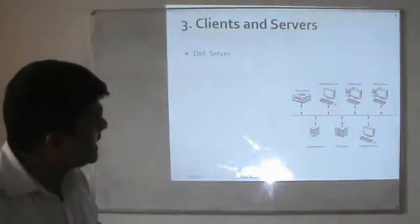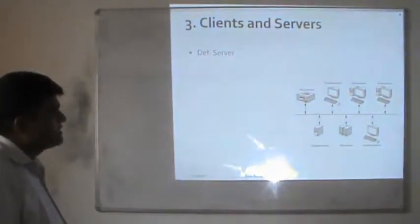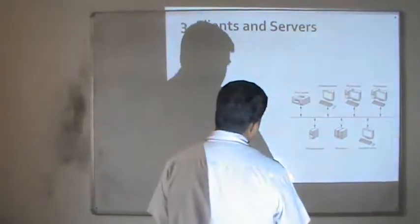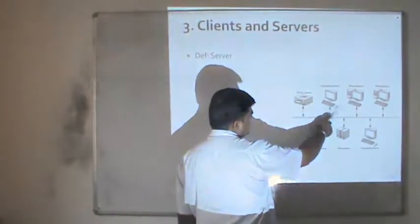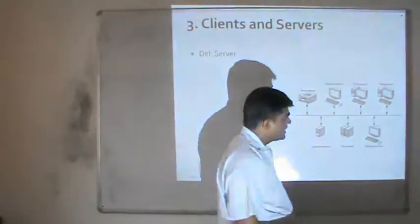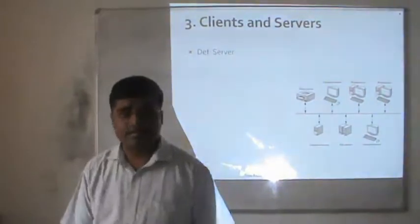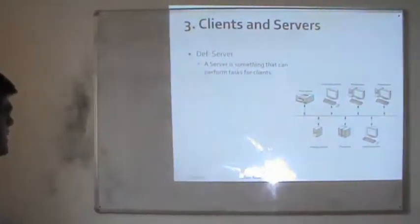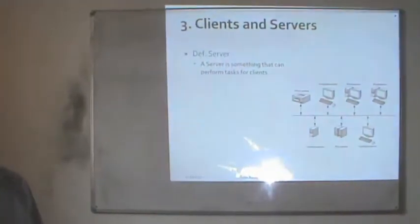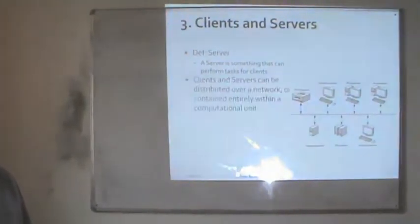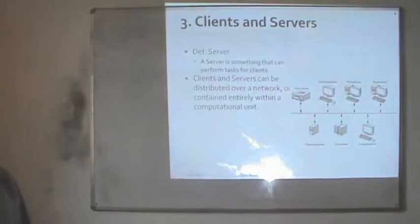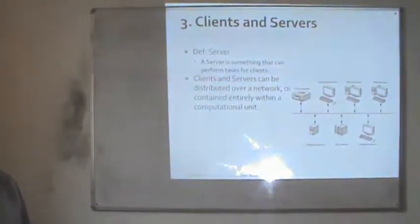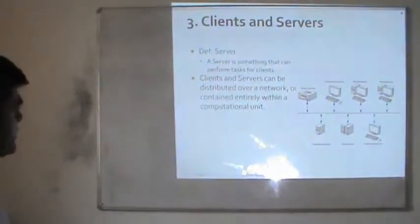Next are clients and servers. Data exchange also takes place here and GUI-based systems have a role to play. All these components are attached in a network and there are several types of devices shown. A server is something that can perform tasks for clients. Clients and servers can be distributed over a network and contained within a computational unit.